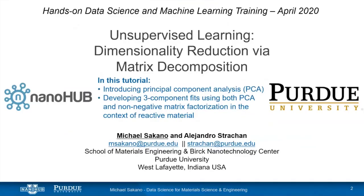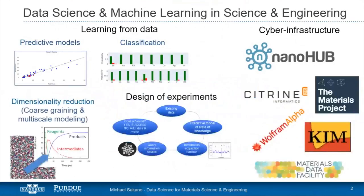Today I will be talking about unsupervised learning using dimensionality reduction, and we're going to approach it from two different matrix decomposition techniques: namely principal component analysis and non-negative matrix factorization. In the second part we're going to address it in the context of a chemistry example.